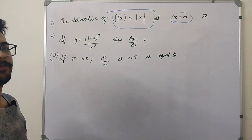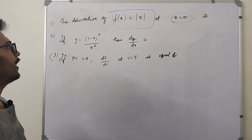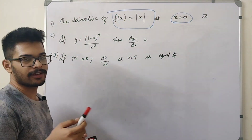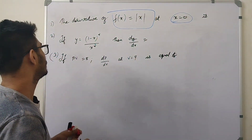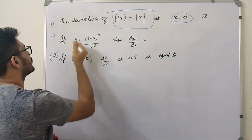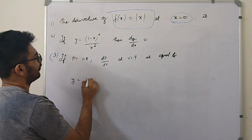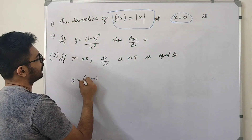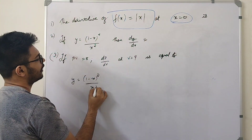If y equal to 1 minus x squared divided by x squared, then dy by dx. This is a similar question: y equal to 1 minus x squared divided by x squared.